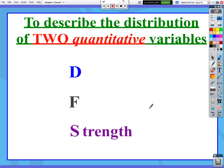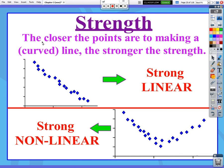And then S is going to stand for strength. The strength is going to be the part that's going to take a little while to get used to. I define strength as the closer the points are in your scatter plot, the closer the points are to making a line or even a curved line, if it's a non-linear scatter plot, the stronger the strength is. So in this scenario, notice all these points, they're not lining up perfectly to make a straight line, but it's pretty close. So since these are really close to making a straight line, we would call that strength strong. This is a strong linear scatter plot. This would still technically be a strong strength, but it's a non-linear strong.